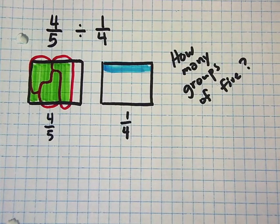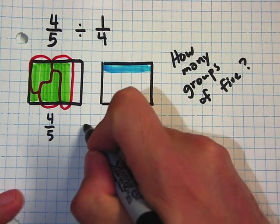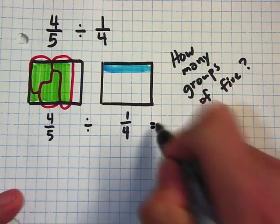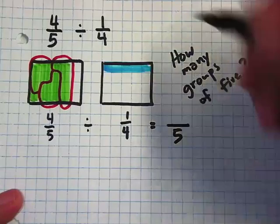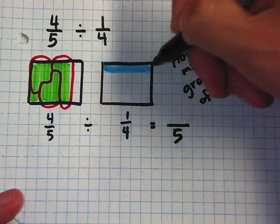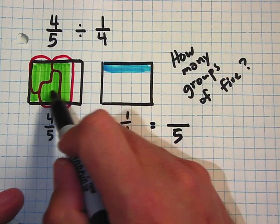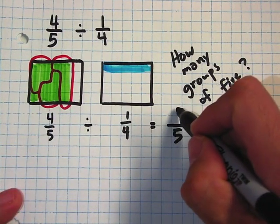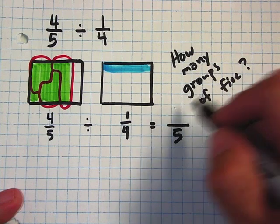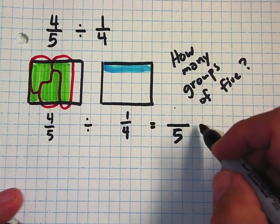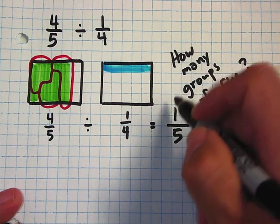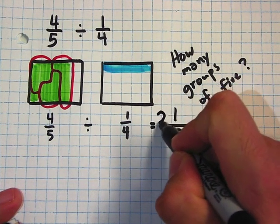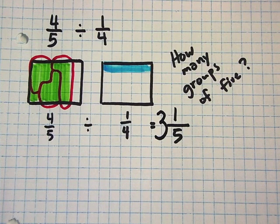So let's go down to our problem. Four-fifths divided by one-fourth equals... The denominator is five because that's what I was counting. How many groups of five? The one remainder, and how many groups are there in total? There's one, two, three. So my answer is three and one-fifth.